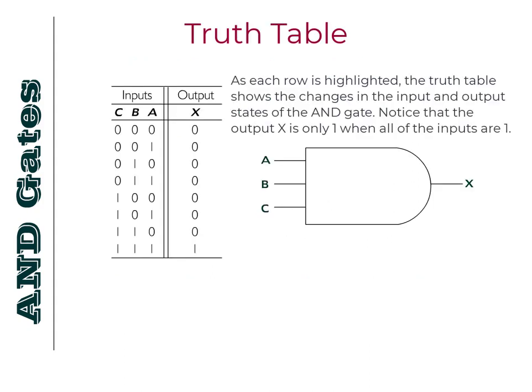As each row is highlighted, the truth table shows the changes in the input and output states of the AND gate. Notice that the output X is only 1 when all of the inputs are 1.